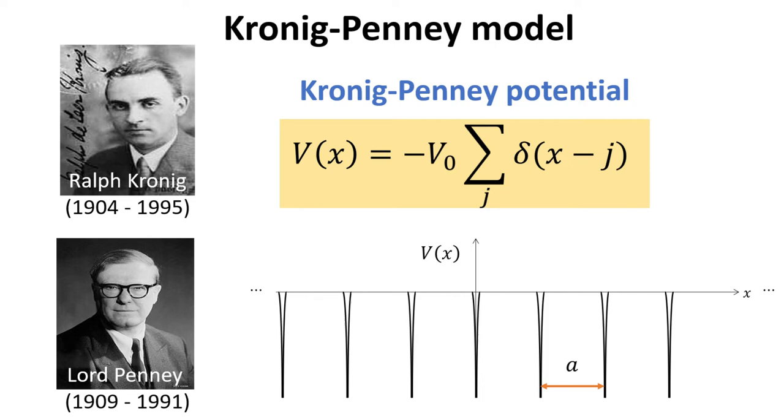In our discussion of Bloch's theorem, we focused on the eigenstates of electrons in a periodic potential and showed that they are plane wave-like. Here, we are going to focus on the eigenvalues of Bloch's states instead and take advantage of the Kronig-Penney model to this end. This is the beginning of our discussion about the electronic structure of solids. Let's get started.